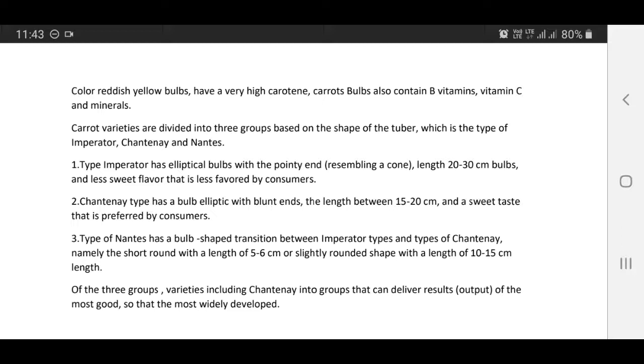Type Nantes has a bulb shaped transition between Imperator types and types of Chantenay, that is intermediate type, namely the short round with length of 5-6 cm or slightly rounded shape with a length of 10-15 cm. Of the three groups, varieties including Chantenay can deliver the best results and output, so that it is the most widely developed. Thank you very much for watching.